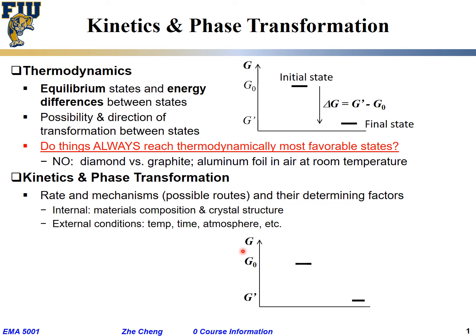Okay, again, look at the same schematic. G, free energy, this guy, initial state, this guy, final state. Delta G equals G prime minus G0. It's negative, means it can happen thermodynamically. But as we said, there may be from one state, initial, to the other state, final, there may be one route, red dashed line, there may be another route, blue solid line, there may be more.